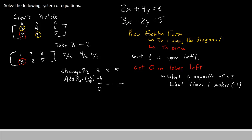It's not enough just to multiply the 1 times negative 3 though — we have to multiply negative 3 times everything in row 1. Negative 3 times 1 gives negative 3, negative 3 times 2 gives negative 6, and negative 3 times 3 gives negative 9. Now we simply add: 3 minus 3 gives 0, 2 minus 6 gives negative 4, and 5 minus 9 gives negative 4. This is my new row 2.